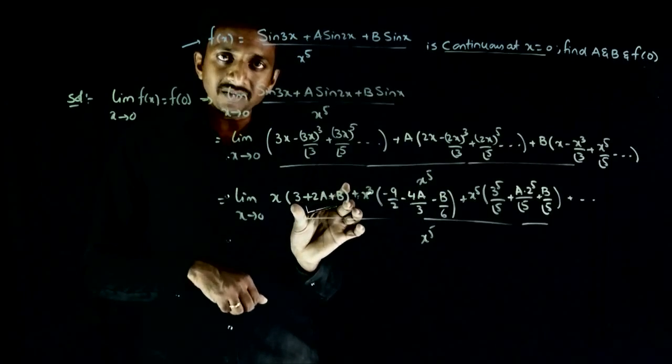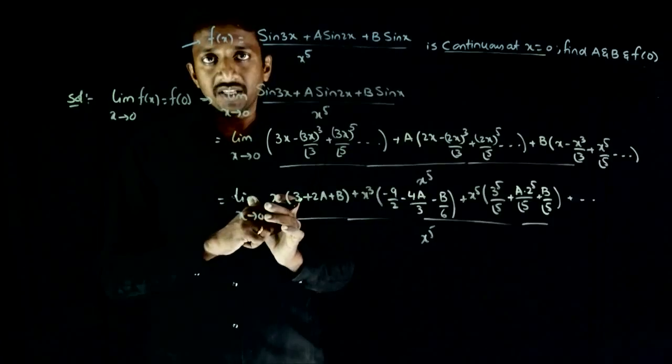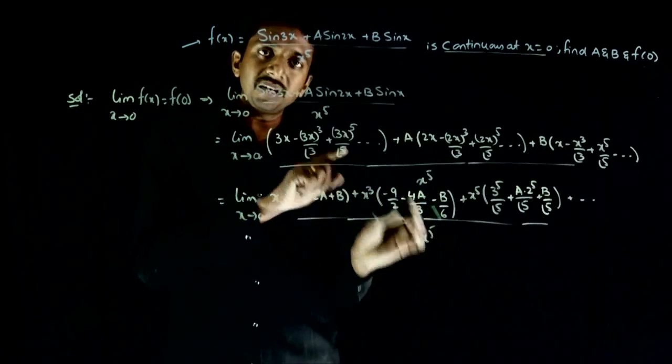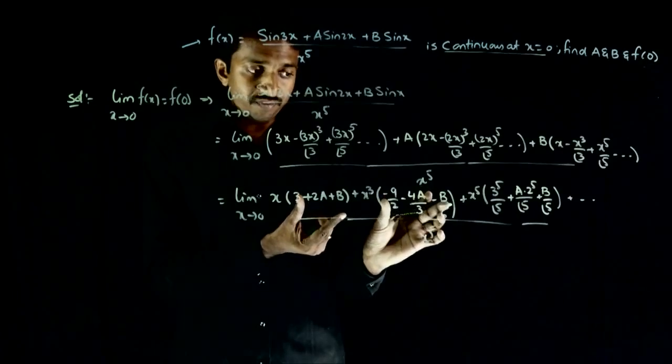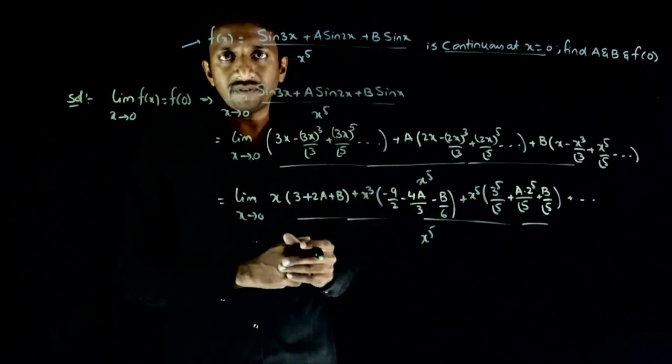Because if the coefficient of this is non-zero, the limit will go to infinity. If this is also non-zero, the limit will go to infinity. Only if these two coefficients are zeros, then the limit will be finite.